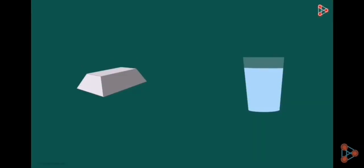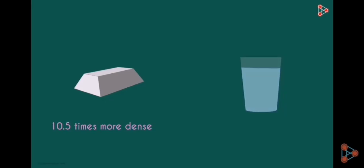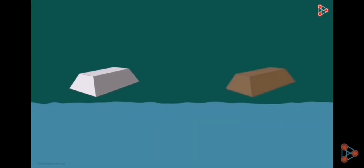What does the relative density tell us? What can we understand from this? First, it tells us that silver is a lot more dense than water under the given conditions — approximately 10.5 times denser. But that's pretty obvious given the numbers. This tells us another important thing.